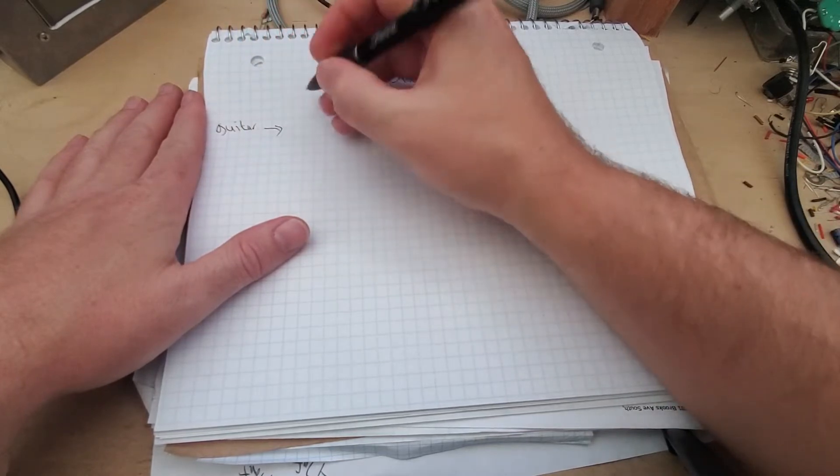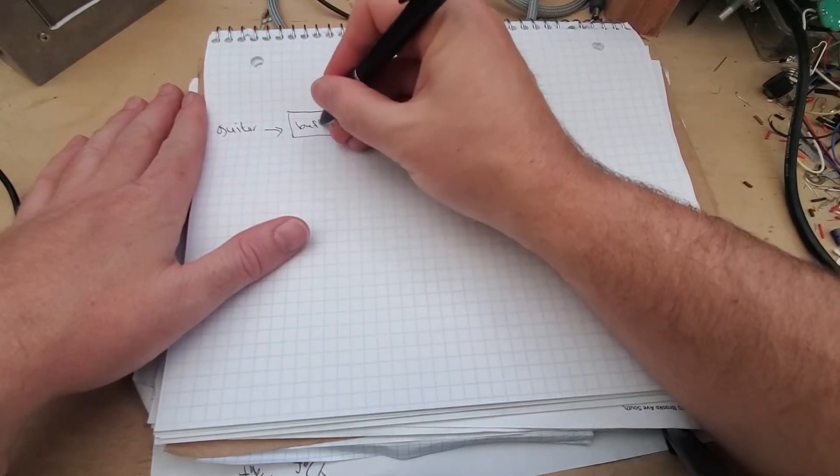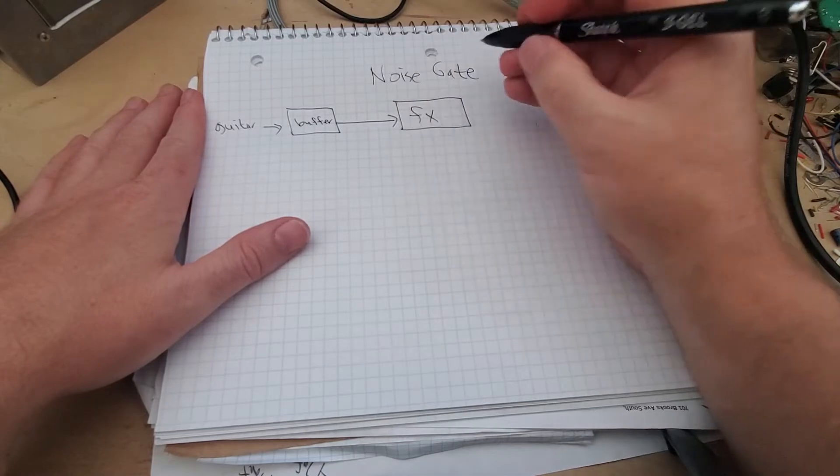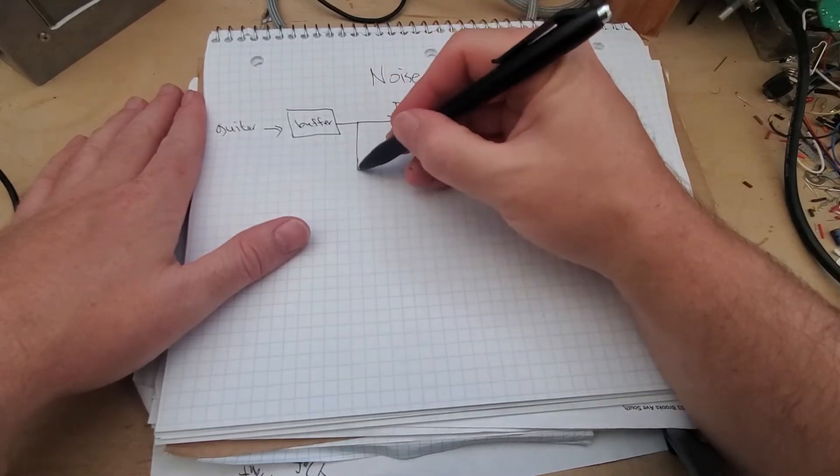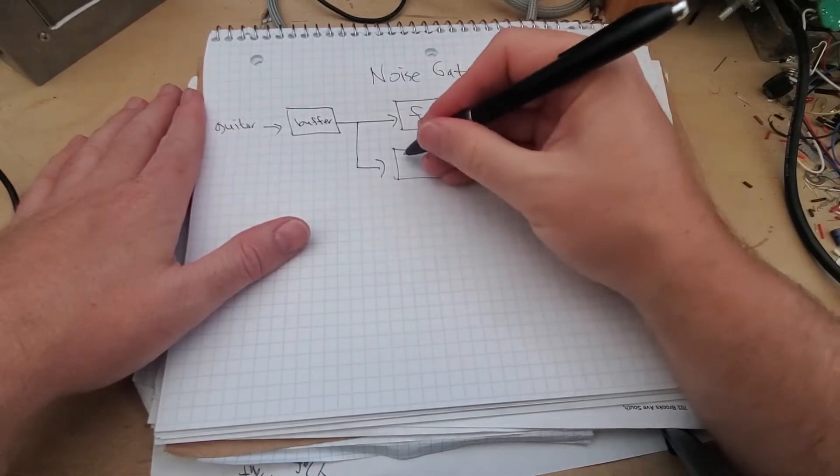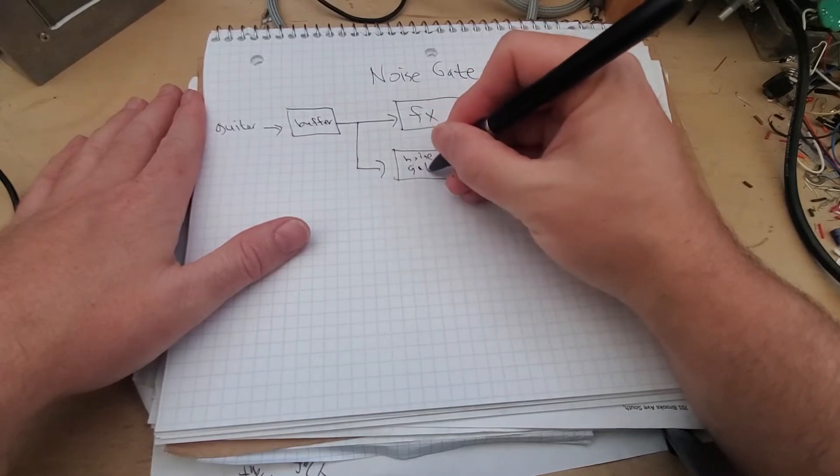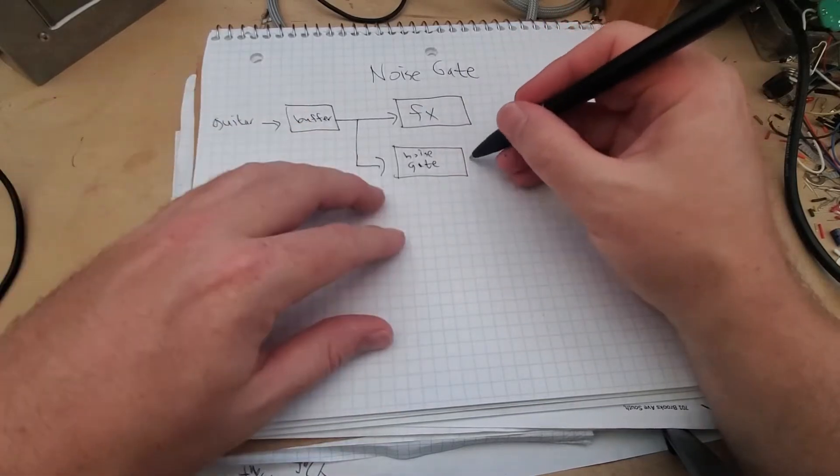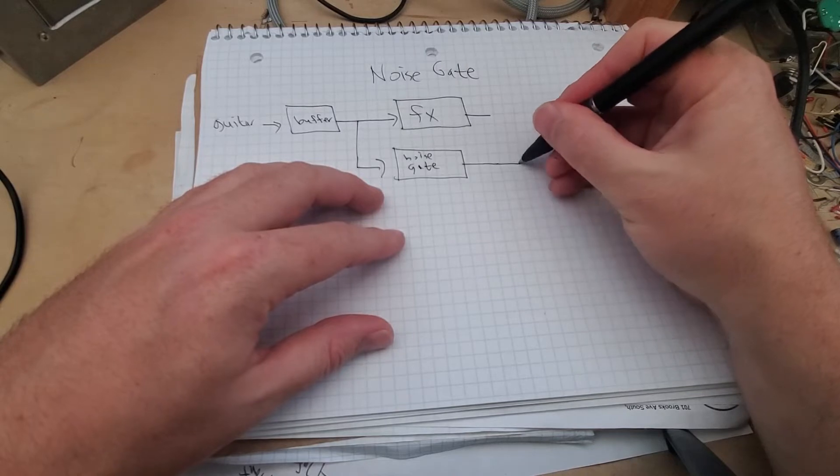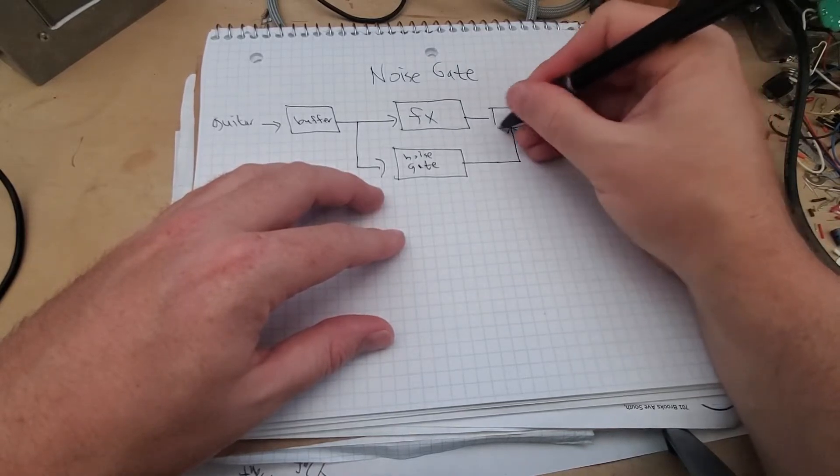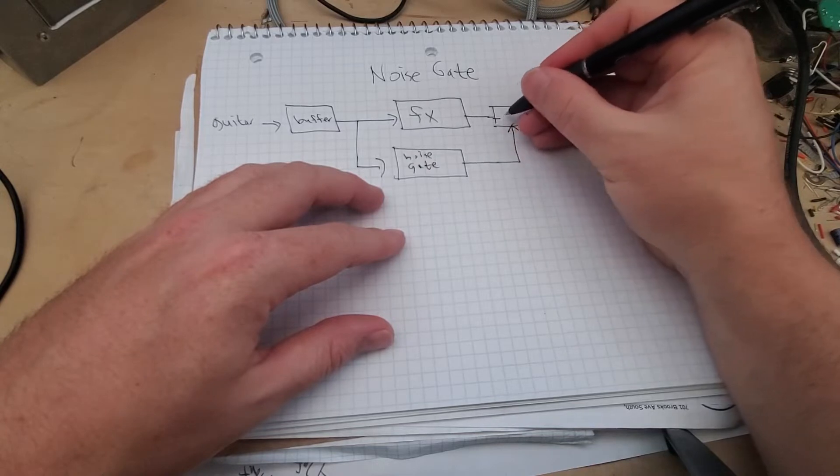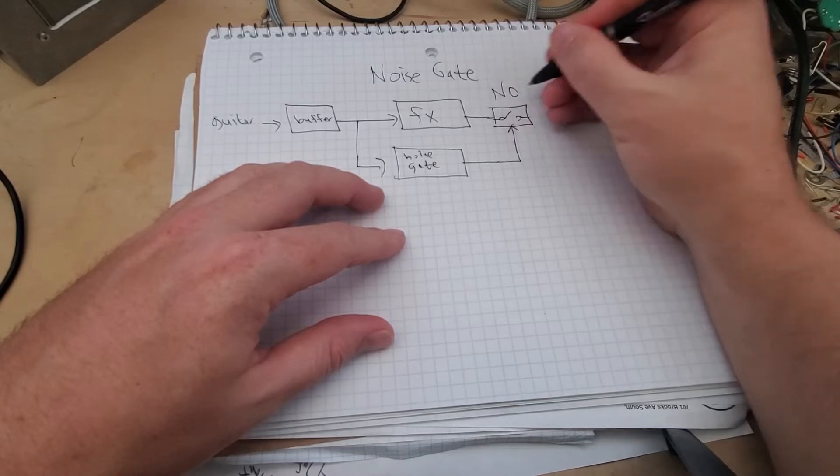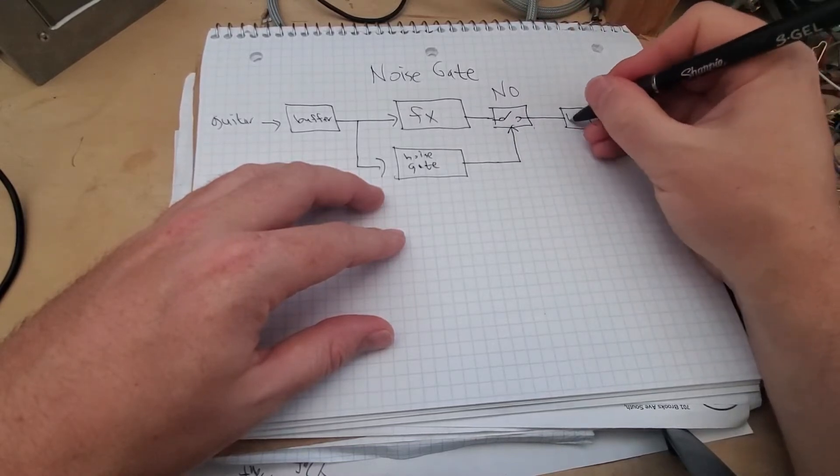We'll start here with our guitar input, and this will go into an input buffer which then goes into your effects loop. Over here we will have our noise gate which will detect the same input that this effects is seeing. Then this noise gate will go into some kind of circuit. In this case we are going to call this a switch, and this is a normally open switch. Then this goes into an output buffer which goes to your output.